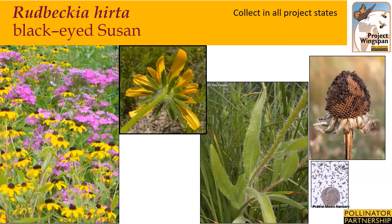Rudbeckia hirta, or black-eyed Susan, is a common native wildflower which typically occurs in prairies, fields, open woodlands, and along roadsides. It is a coarse, hairy plant — the species name 'hirta' means hairy, in reference to the short bristles that cover the leaves and stems. They typically grow one to two and a half feet tall. Each stem produces a single flower up to three inches across, with eight to twenty bright yellow to orange-yellow rays. Its leaves are alternate and feel rough due to stiff hairs. Black-eyed Susans bloom throughout the summer months. The collection time is usually late summer through early fall. When the cone becomes hard and turns grayish or dark brown, the seeds are ripe, usually three to four weeks after the blooms fade. Collect the entire seed head and put it in your collection bags to dry.